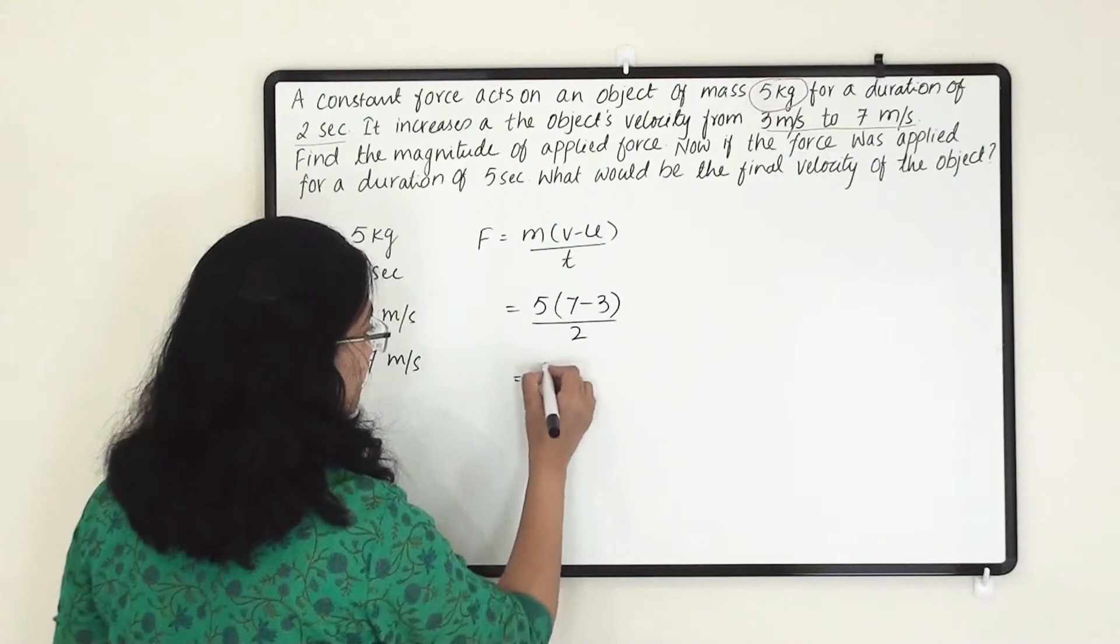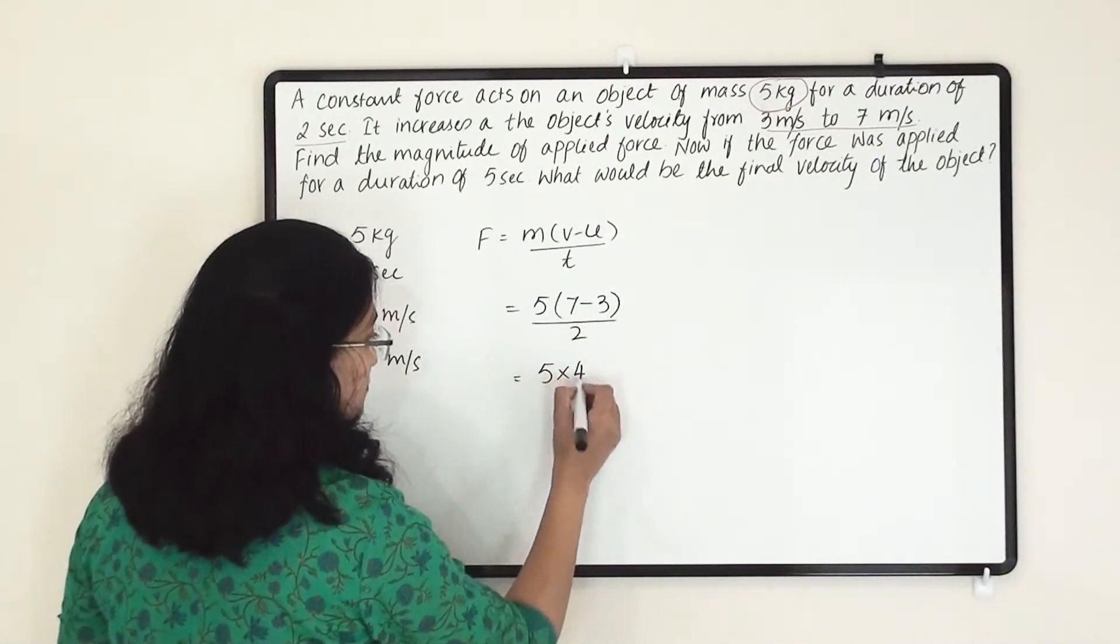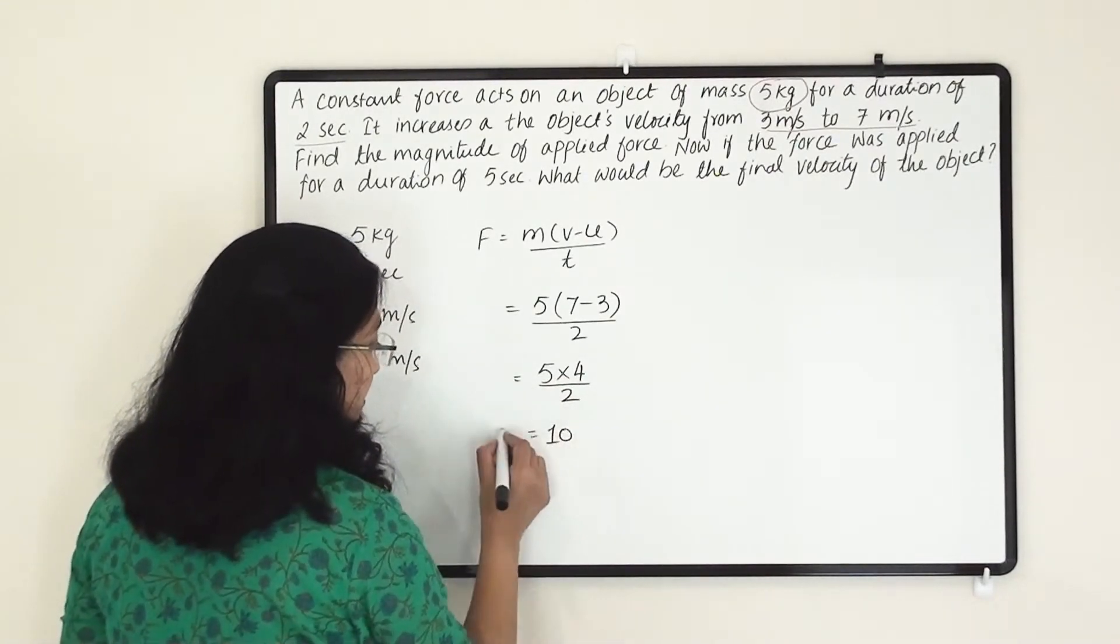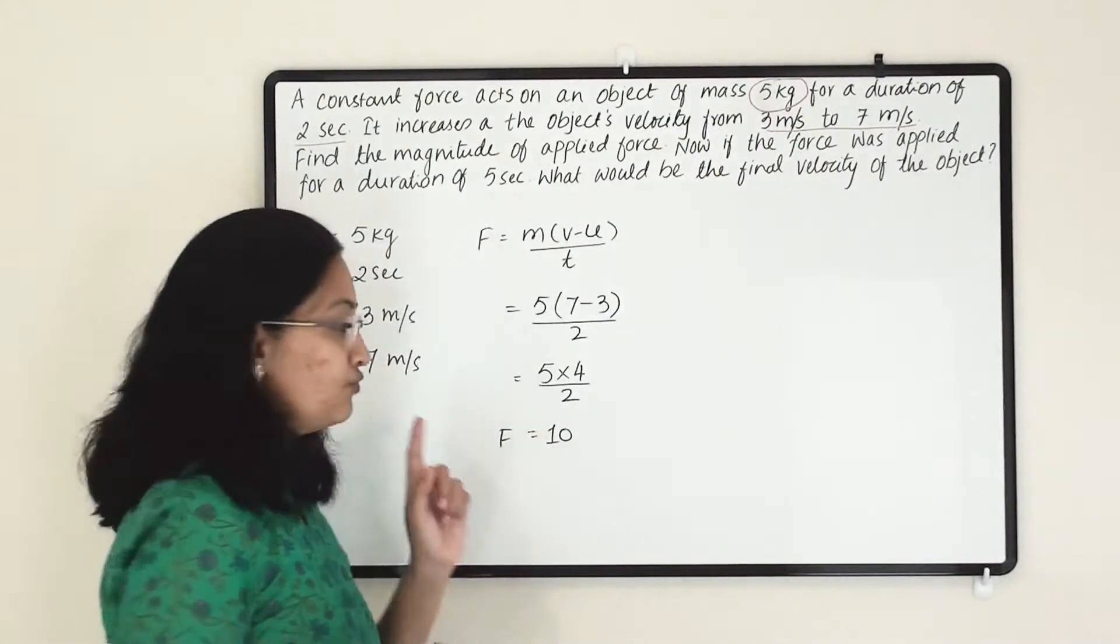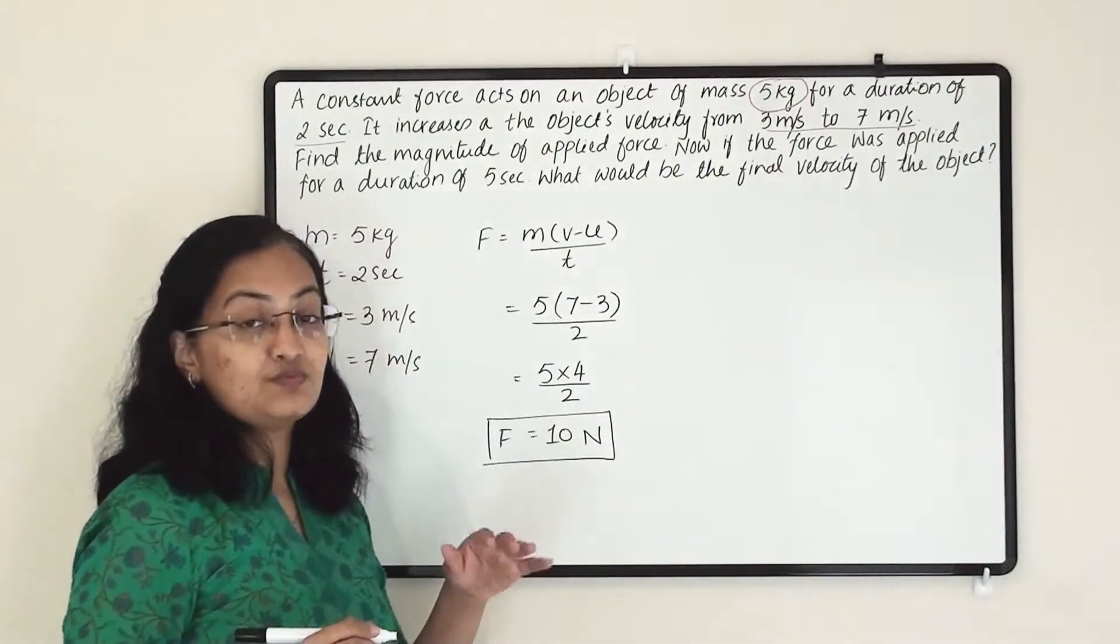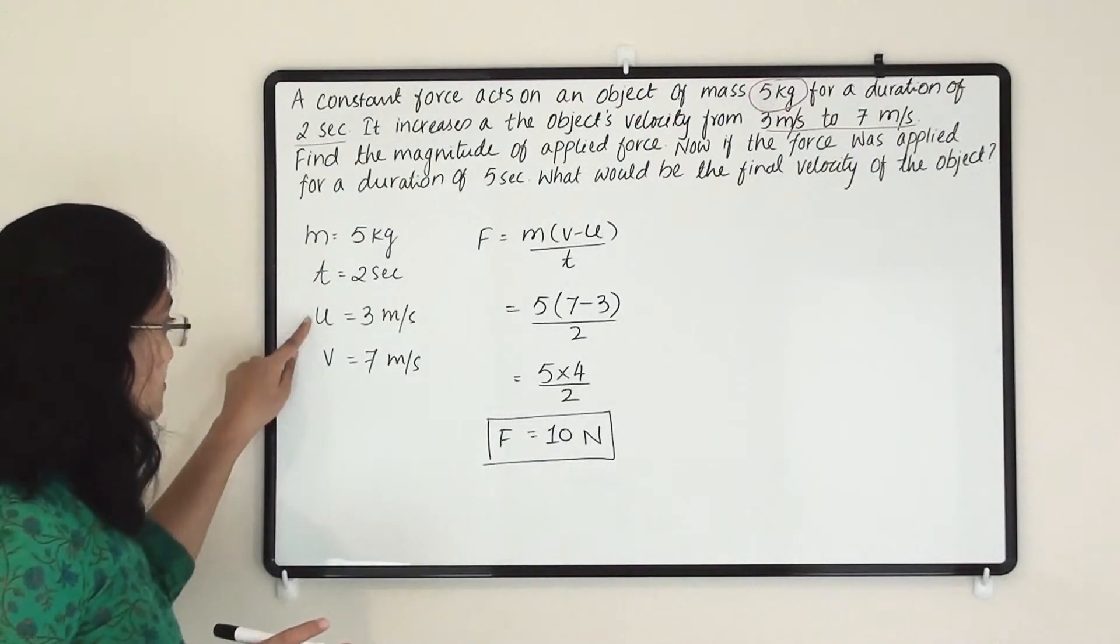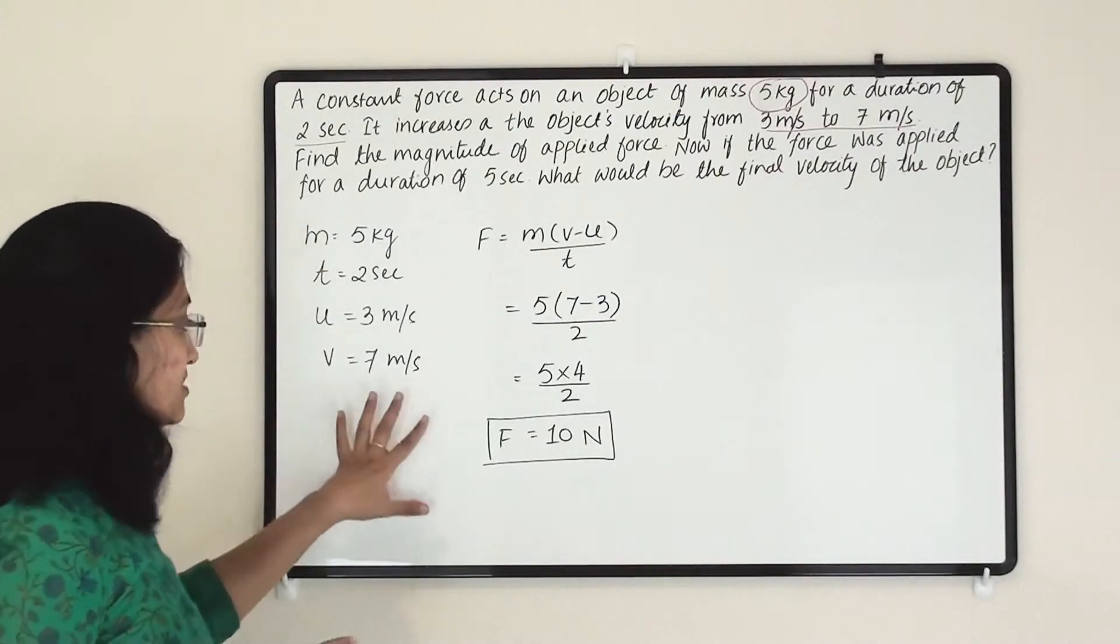So here we are getting 5, 7 minus 3 is 4. So 4 divided by 2, here 20 divided by 2, so we will get 10. Now force is 10. What is the unit of force? That is Newton. So I am writing here N. So when 10 Newton force has been applied on object which is 5 kg for 2 seconds, then its velocity will change from 3 meter per second to 7 meter per second.